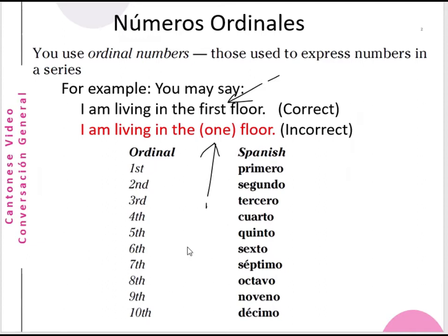For ordinal numbers from first to tenth in Spanish, you say primero, not uno — because uno is the cardinal number and primero is the ordinal number. Primero: first. Segundo: second. Tercero: third. Cuarto: fourth. Quinto: fifth. Sexto: sixth. Séptimo: seventh. Octavo: eighth. Noveno: ninth. Décimo: tenth.